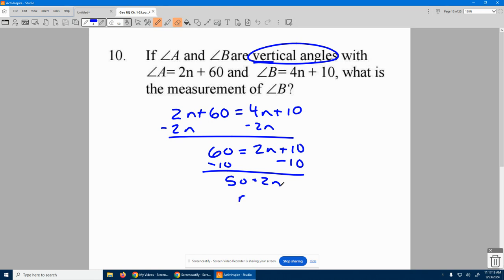Divide by 2, what is n? n is 25, but it doesn't ask for n. It says, what is angle B? So we have to come back here and do 4 times that n of 25 plus 10. So it's 100 plus 10. Angle B is 110 degrees.